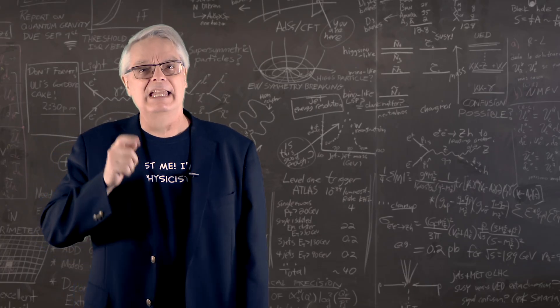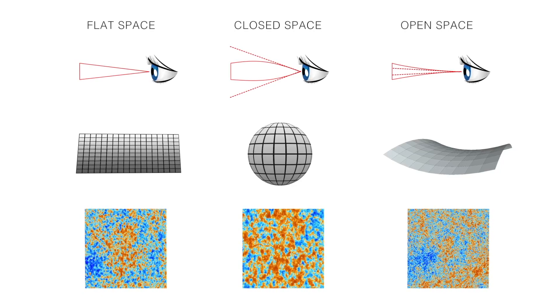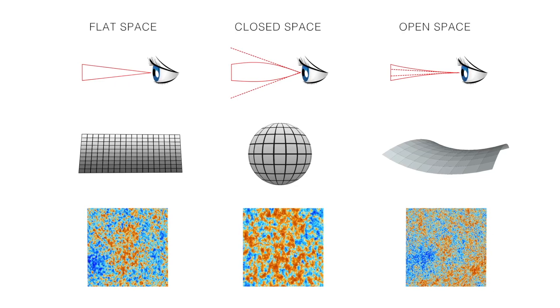But, hold on. That's if space is flat. If space is curved in some way, say like a sphere or a saddle, then the lines connecting the CMB to our eyes will be distorted.